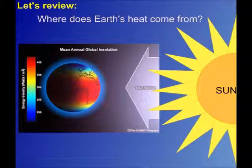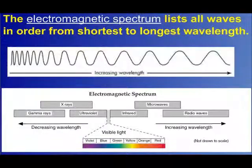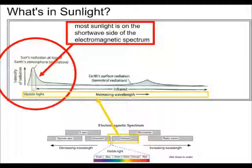Let's review a little bit about how heat interacts with Earth's atmosphere. Most of the heat in the atmosphere originates with the sun. The electromagnetic spectrum on page 14 lists all waves in order from shortest to longest wavelength. You can see on the left side are all the shortest waves, and the right side is all the longest waves. The sunlight that we get is mostly on the short wave side of the electromagnetic spectrum.